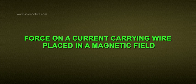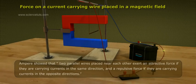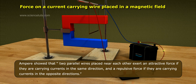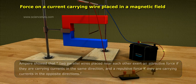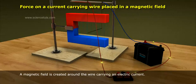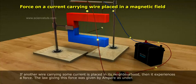Force on a current carrying wire placed in a magnetic field. Ampere showed that two parallel wires placed near each other exert an attractive force if they are carrying currents in the same direction, and a repulsive force if they are carrying currents in the opposite directions.